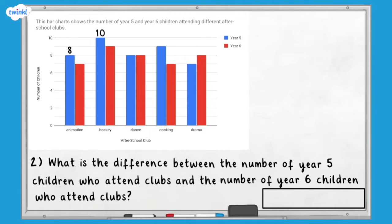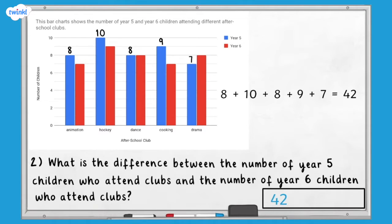Ten year five children attend hockey club. Eight year five children attend dance club. Nine year five children attend cooking club and seven year five children attend drama club. To work out the total number of year five children who attend clubs, we need to add these numbers together.